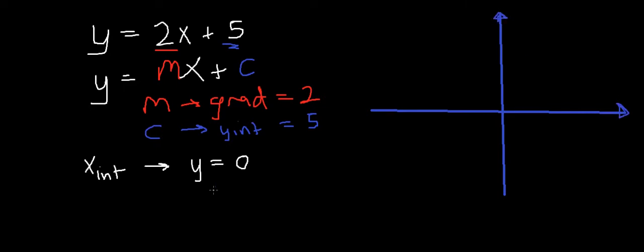Here's our Cartesian plane. When y is 0—here's y, here's x—which is anywhere along this line, you'll find your x-intercept here. So y is 0.